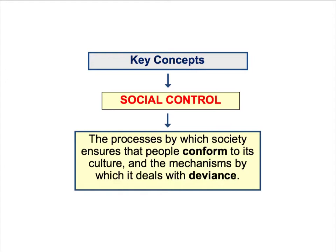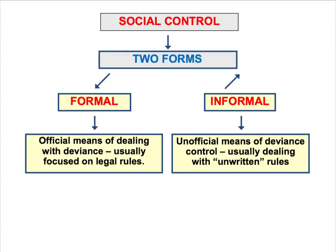Deviant behaviour is behaviour that departs from the dominant norms and values of the culture. We can identify two forms of social control in society. Firstly, there's what we call formal social control — the official means of dealing with deviant behaviour. This is about people obeying the law and relates to institutions of the state. In addition to that, there are also various mechanisms of informal social control — the more unofficial means of controlling deviant behaviour, focused on the unwritten rules of social behaviour within a culture.